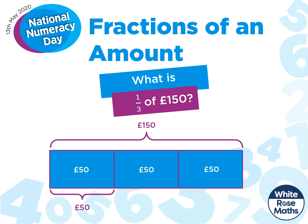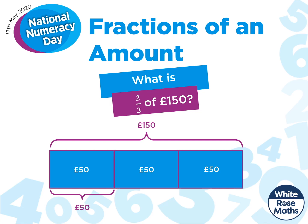One-third of £150 is £50. Okay, so what if we changed our question slightly? Instead of finding one-third, let's find two-thirds. Our whole is going to stay exactly the same. This time we just need two of the equal parts instead of one. So two-thirds of £150 is £100. Easy.